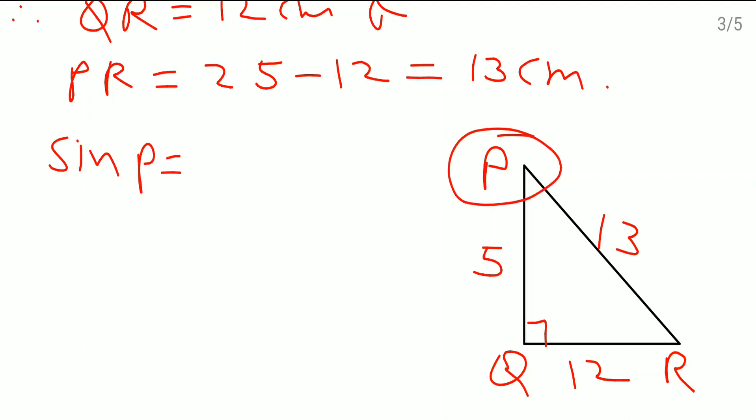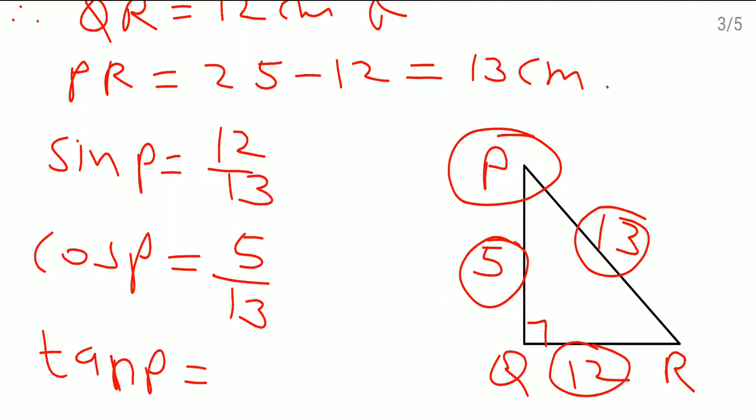Sine means what? Opposite by hypotenuse. This is the opposite side. This one is the hypotenuse. So here I will write down 12 by 13. Then cos P, look at this one cos means adjacent by hypotenuse. So here 5 by 13 and then tan P, tan means opposite by the adjacent which comes as 12 by 5.